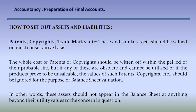Patents, copyrights, trademarks, etc.: these and similar assets should be valued on the most conservative basis. The whole cost of patents or copyrights should be written off within the period of their probable life. But if any of these are obsolete and cannot be utilized, or if the products prove to be unsellable, the value of such patents, copyrights, etc. should be ignored for the purpose of balance sheet valuation. In other words, these assets should not appear in the balance sheet at anything beyond their utility value to the concern in question.